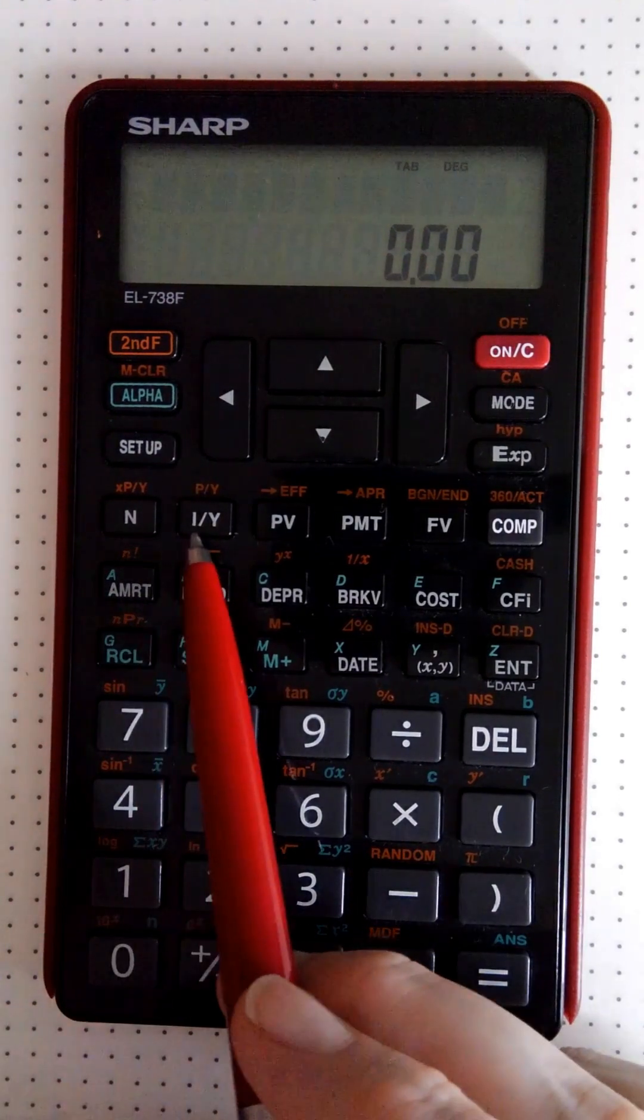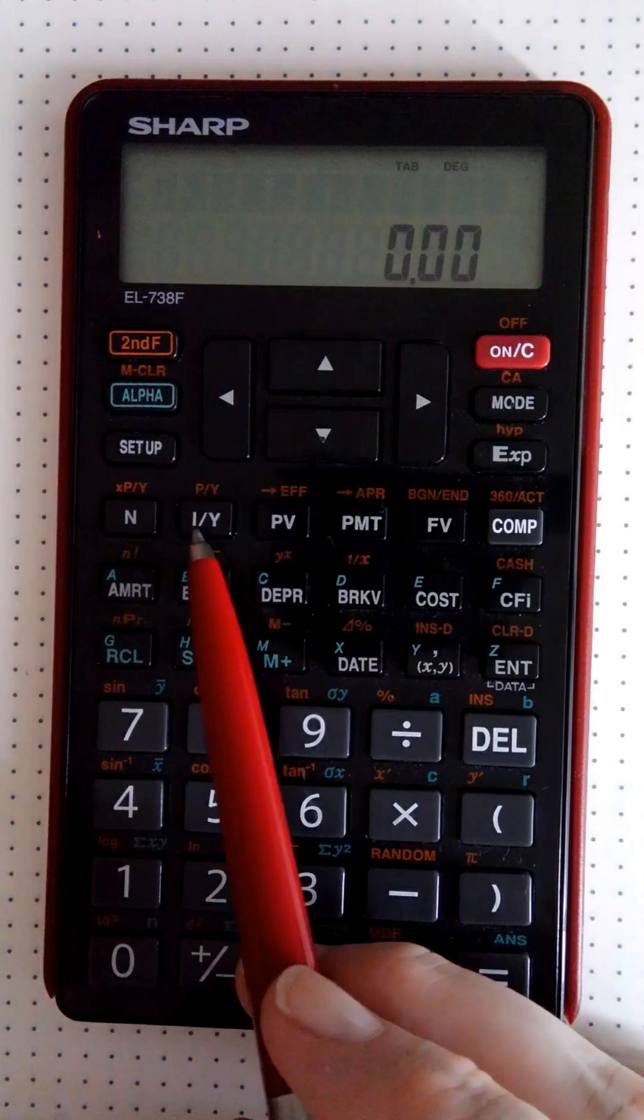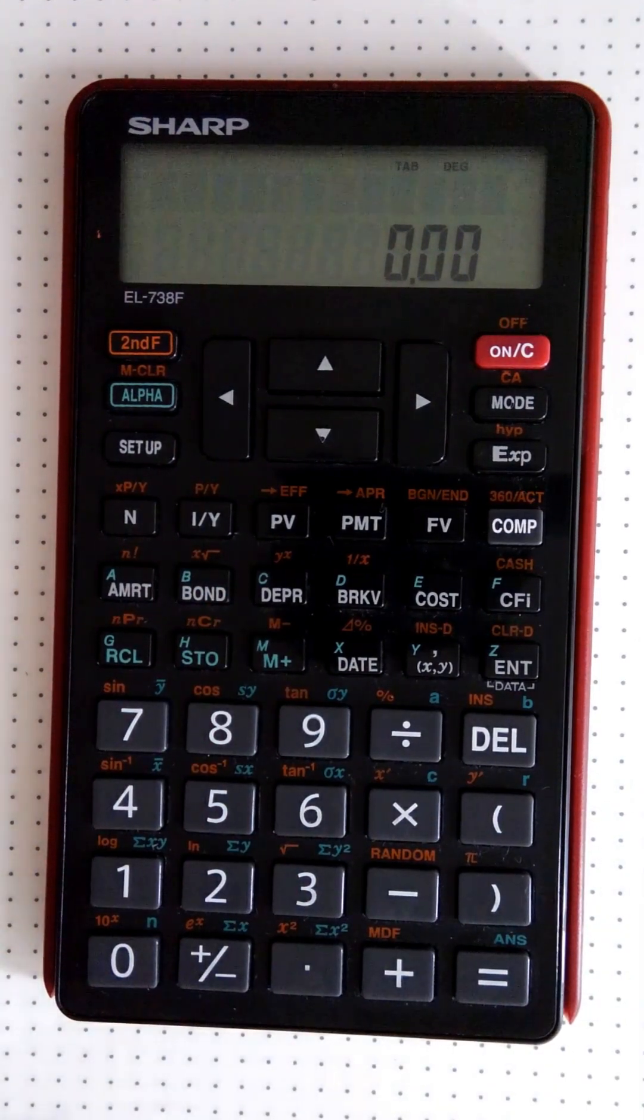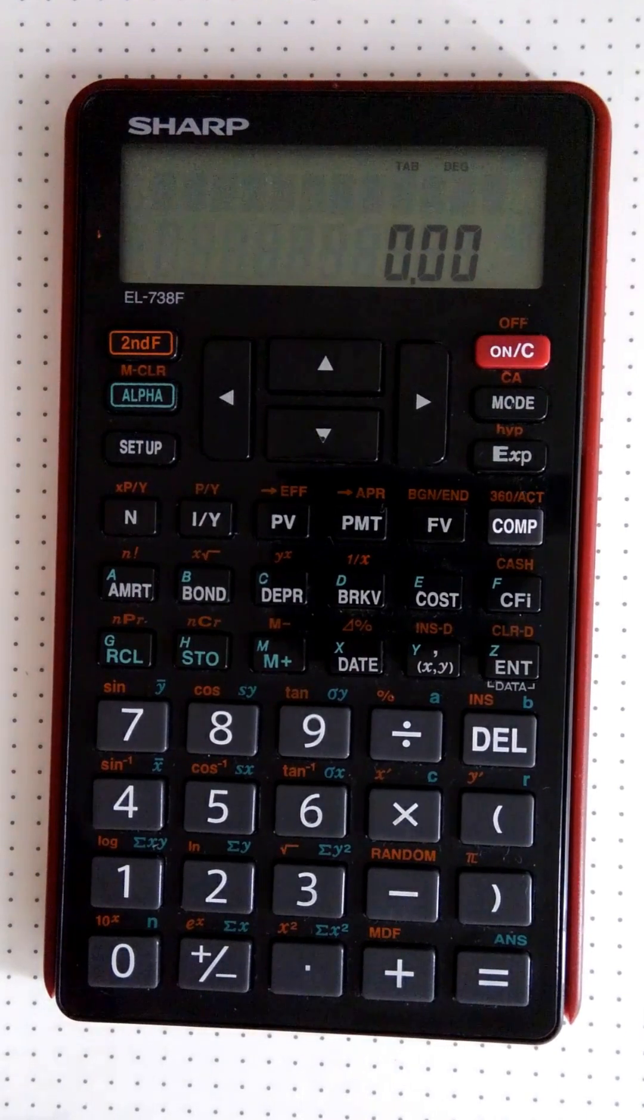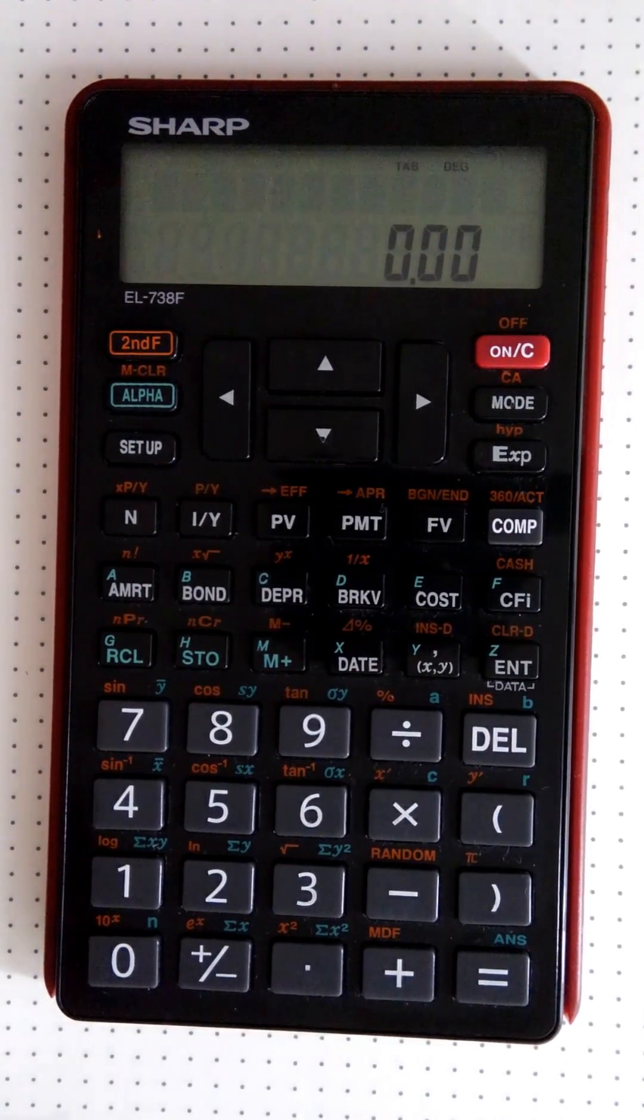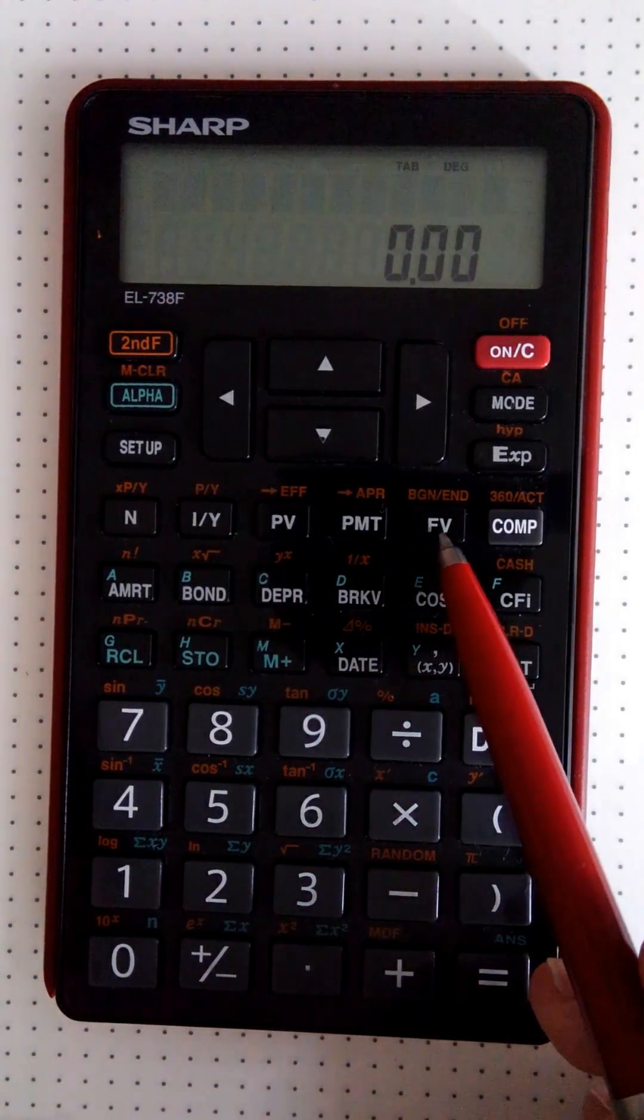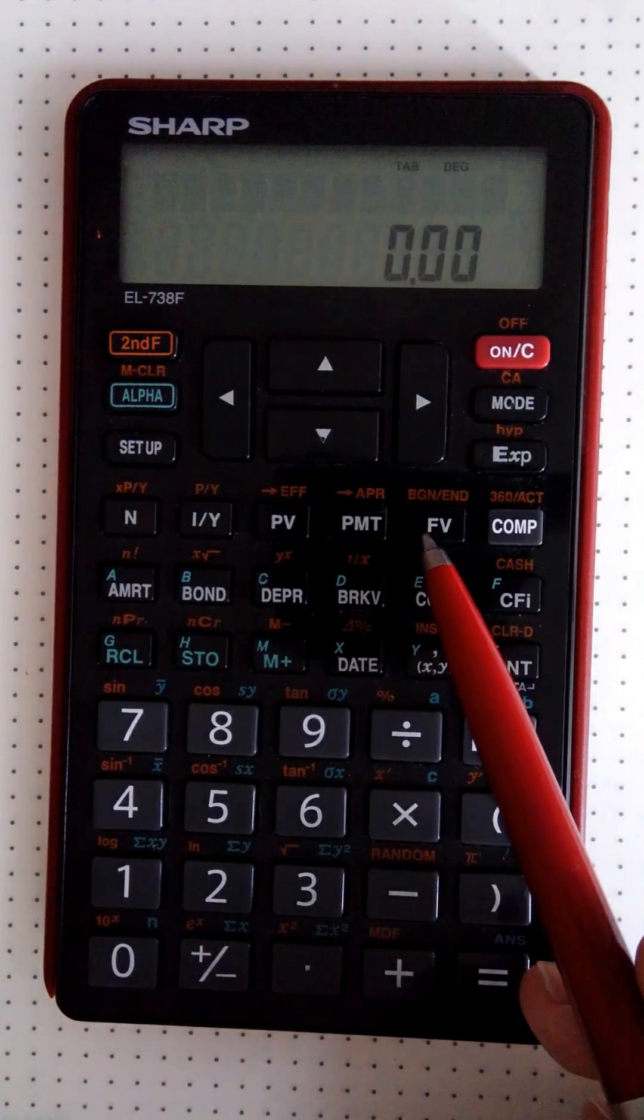Then we'll have our IY, and this is our interest rate per year. So this is our nominal interest rate, and it's in percentage. So when we use the financial calculator, it doesn't do what we do with the formulas where we need to convert it. It will do it for us. And then we have our PV, which is our present value, and then we're interested in our FV, which is our future value.